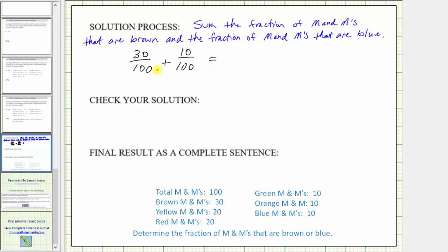And now we'll determine the sum. Notice how we already have a common denominator. So to find the sum, we add the numerators — 30 plus 10 is equal to 40. The denominator remains the same, so the sum is equal to 40 hundredths, which means 40 hundredths of the M&Ms are brown or blue.